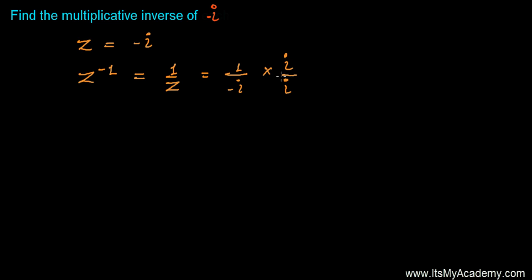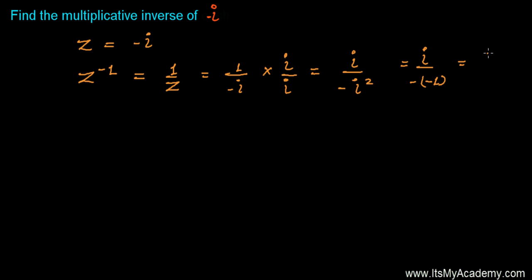I'm doing this by the manual way, but by the normal way you can use the shortcut methods also, or you can use the formula to find out the multiplicative inverse of anything. So it is iota over negative iota squared, and iota squared — everybody knows, my dear friend — that is minus one. So it's going to be iota over negative of minus one, which is simply iota.